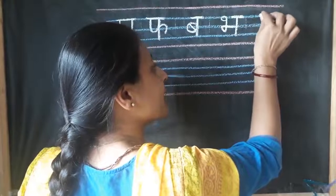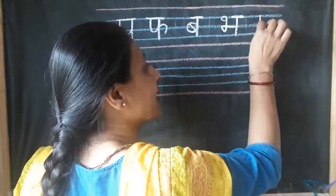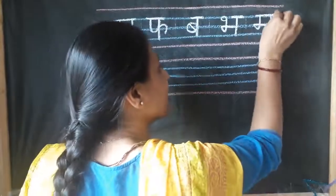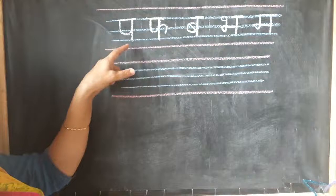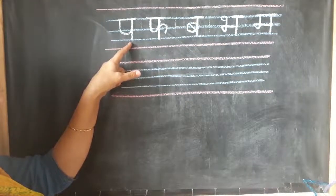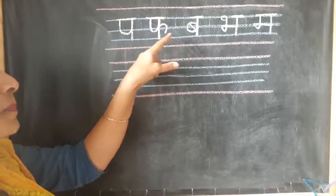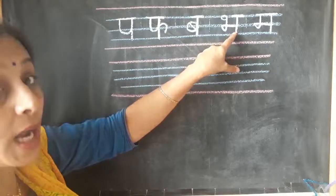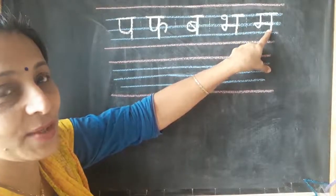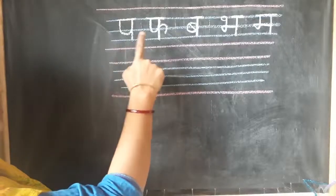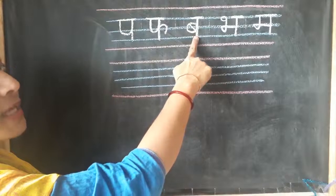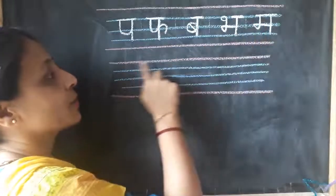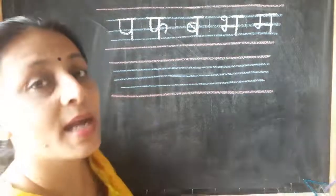Ma we are going to write like Bh, but without the loop. Standing line, go up, sleeping line on the second blue line, standing line, and sleeping line overhead. So children, everyone say with me — once again. This is how we are going to write in our Hindi skill book.